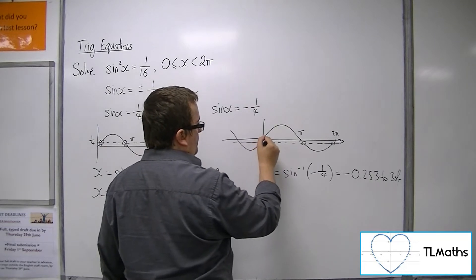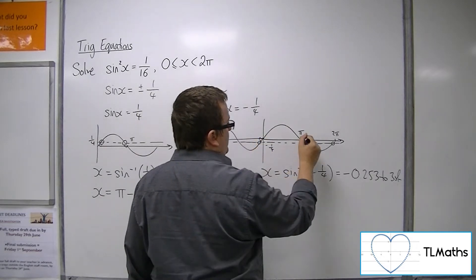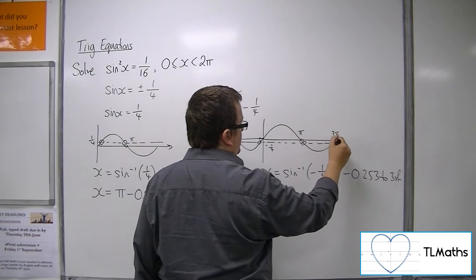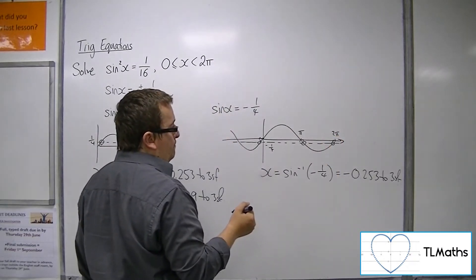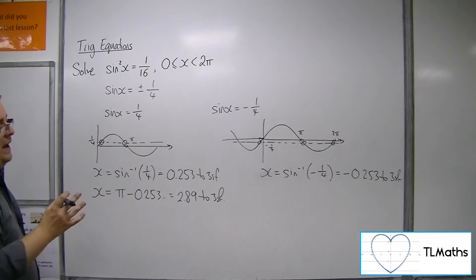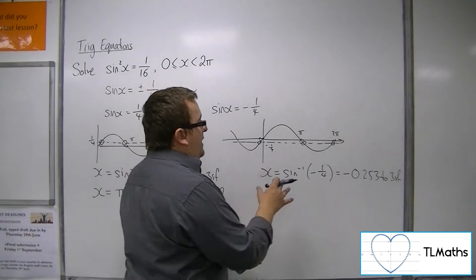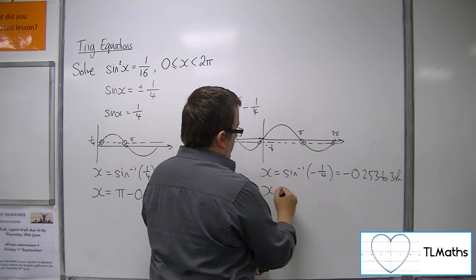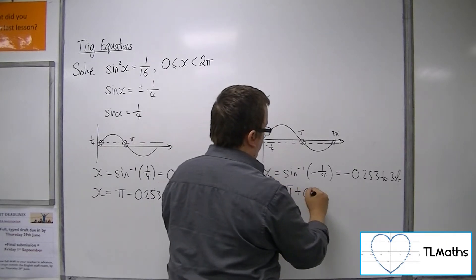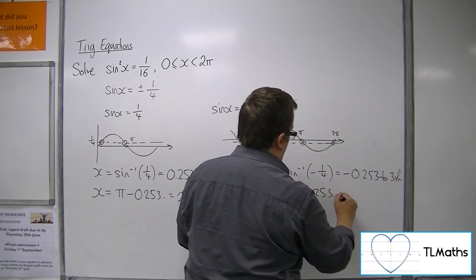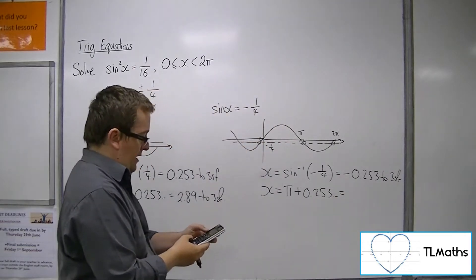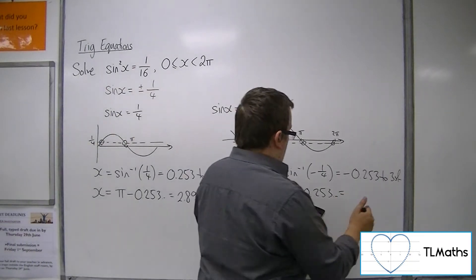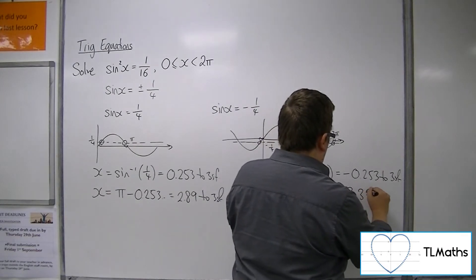So that means that I can add 0.253 to π and subtract it from 2π to get the solutions I want. So one of them is 3.39.